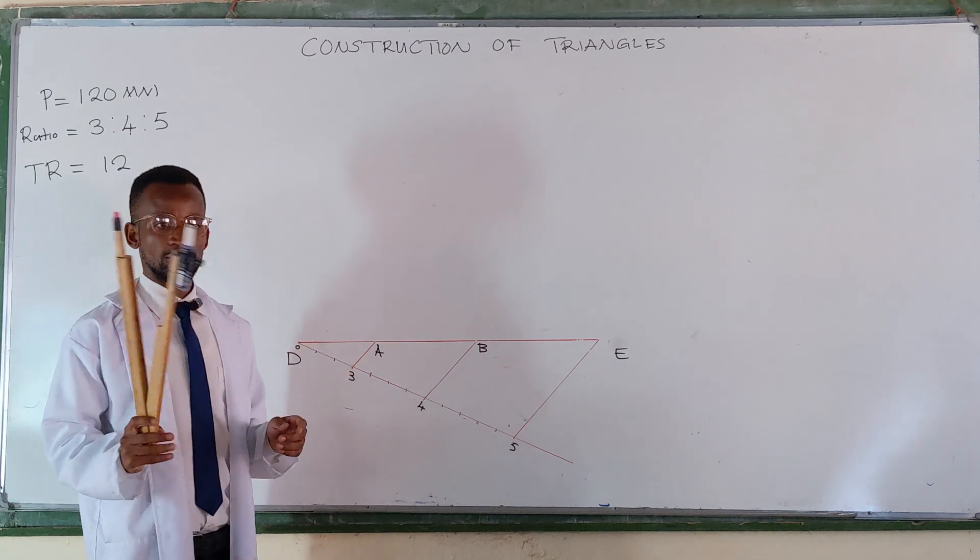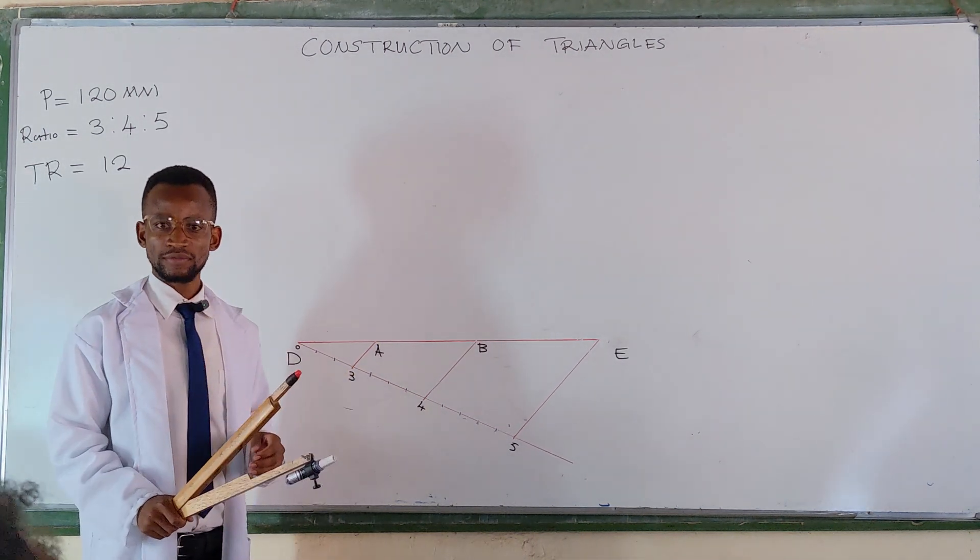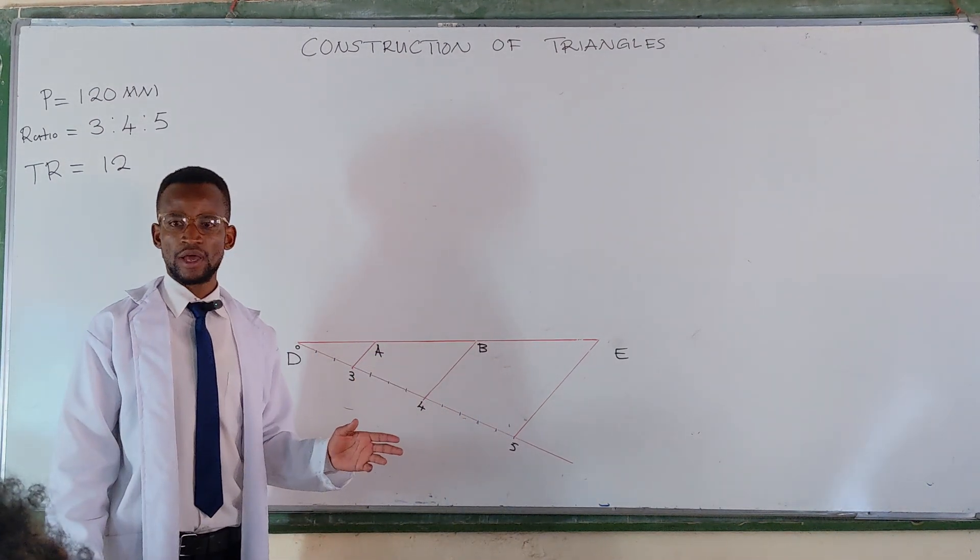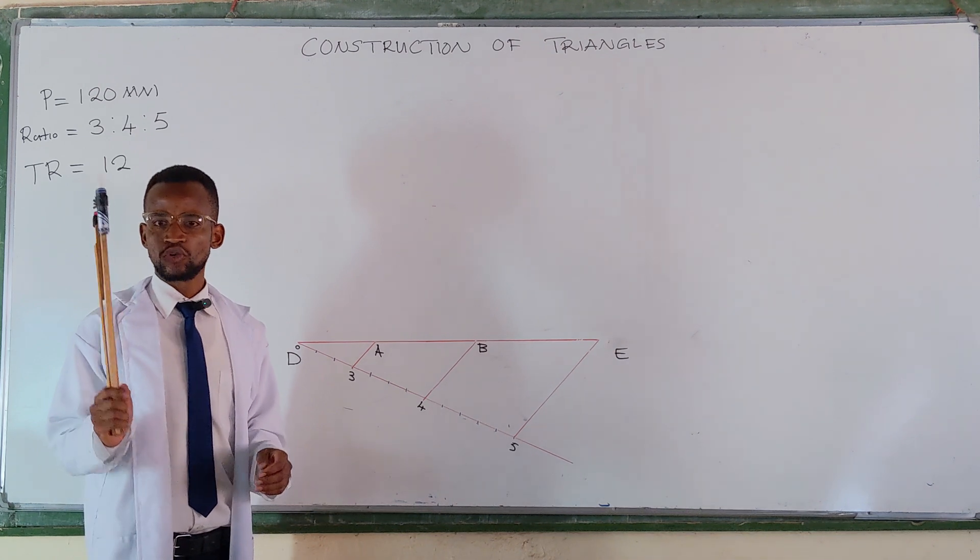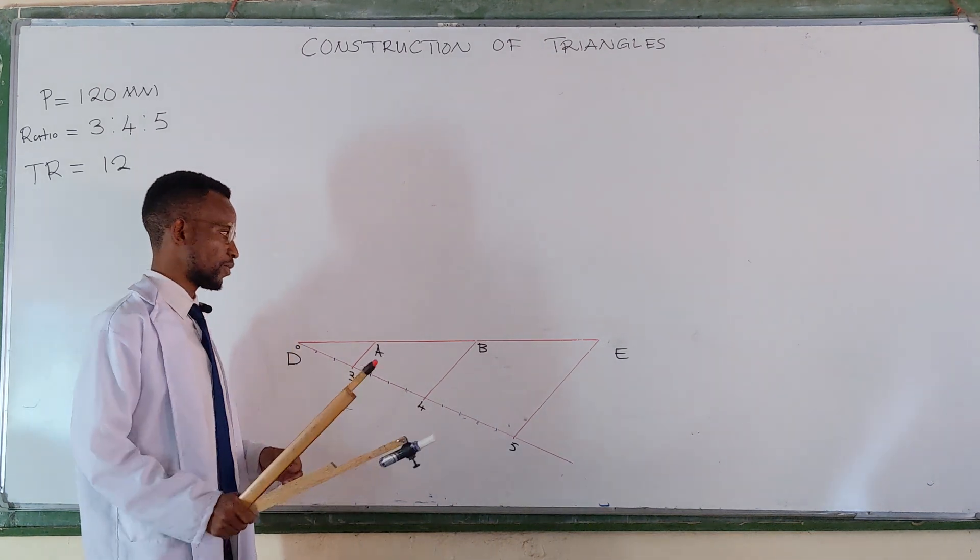Obviously, in your statement there, you'd written to construct triangle A, B, C. So from that triangle, we already have A and B. The only task that we have here is now to locate point C. So how do we come up with point C?